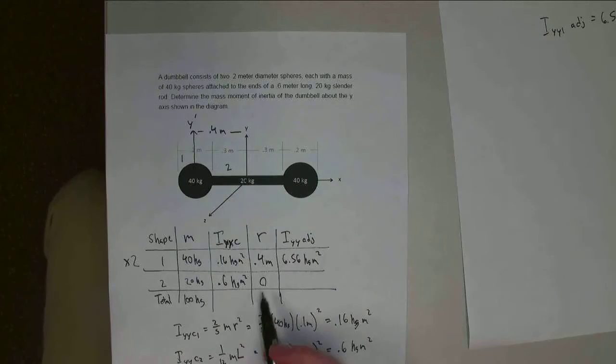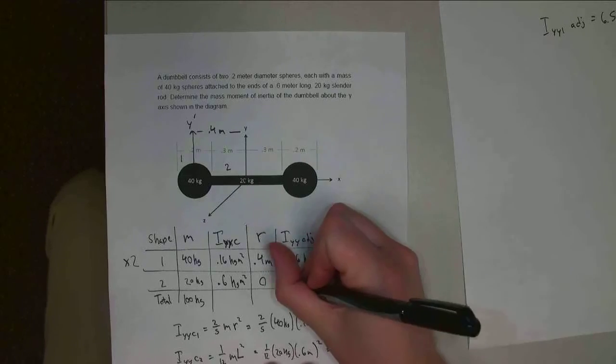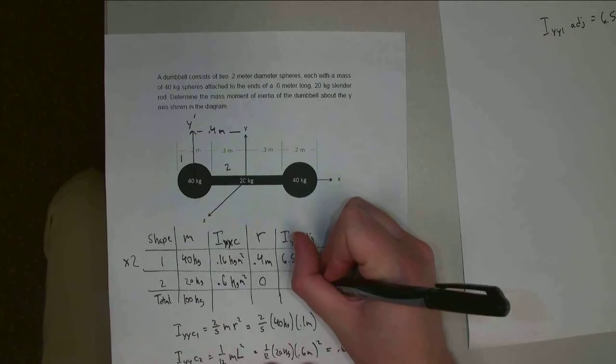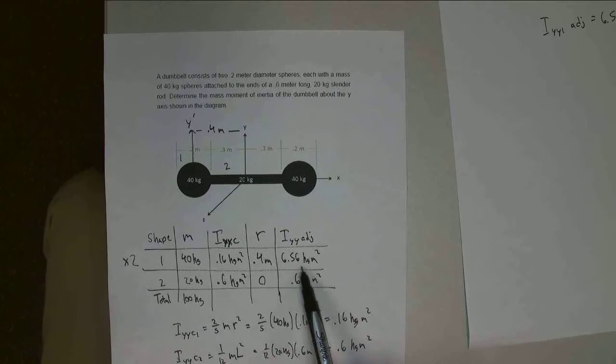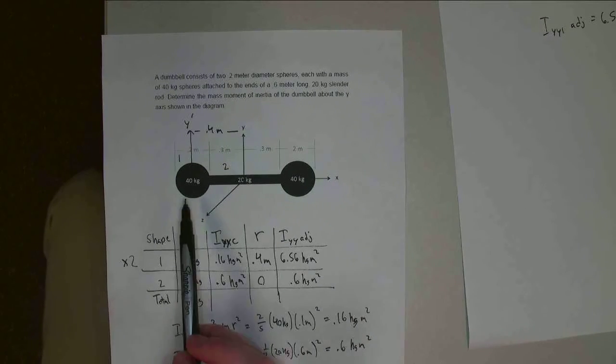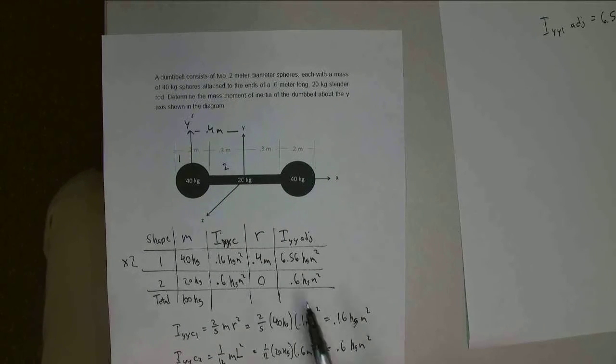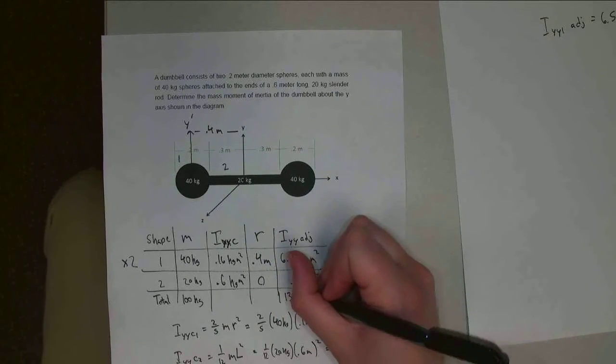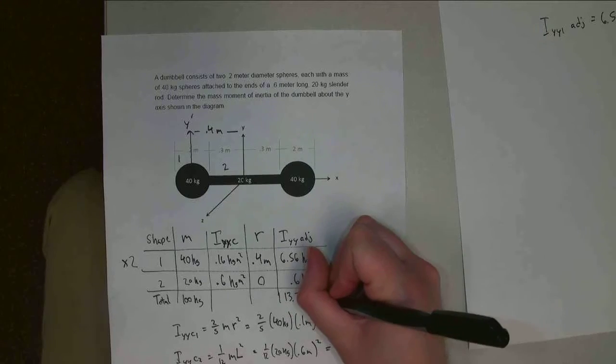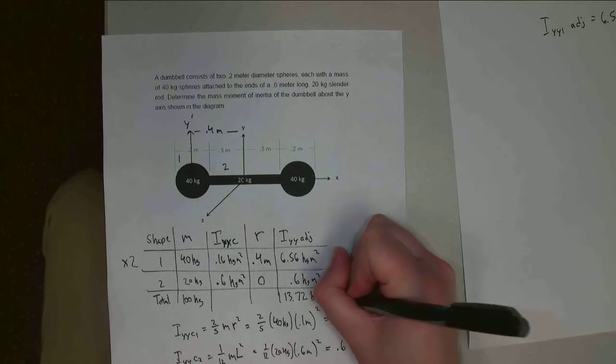This one, there is no adjustment. My r value is 0, so it's still 0.6 kilogram meters squared. And if I add 6.56 times 2, since I've got two of these, plus 0.6, I get the overall mass moment of inertia, which is going to be 13.72 kilogram meters squared.